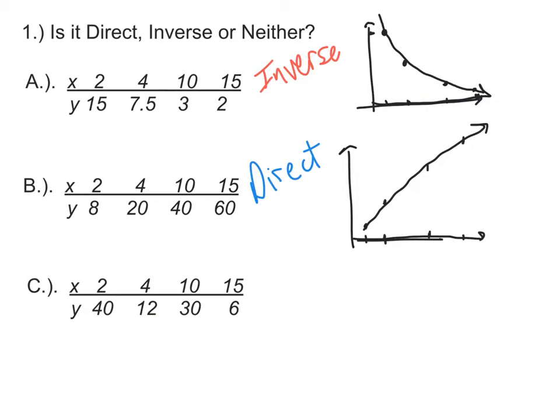And when it's shrinking, it would be inverse variation. Now let's take a look at the last one and see. When we pay attention to what happens to the y values, we start at 40, down to 12, up to 30, down to 6. And because it's going up and down, we're not really going to be able to tell if it's direct or inverse.